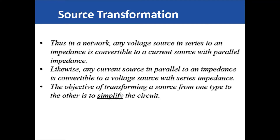The objective of transforming a source from one form to the other is to simplify the circuit, especially circuits that contain several loops, until the circuit becomes a very simple circuit — preferably a circuit that has only one loop — where we can apply a simple Kirchhoff's voltage law or Ohm's law to solve the parameters we want to get.